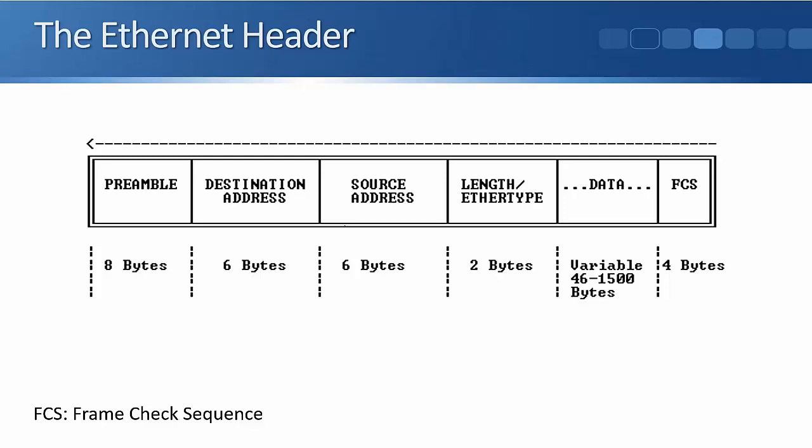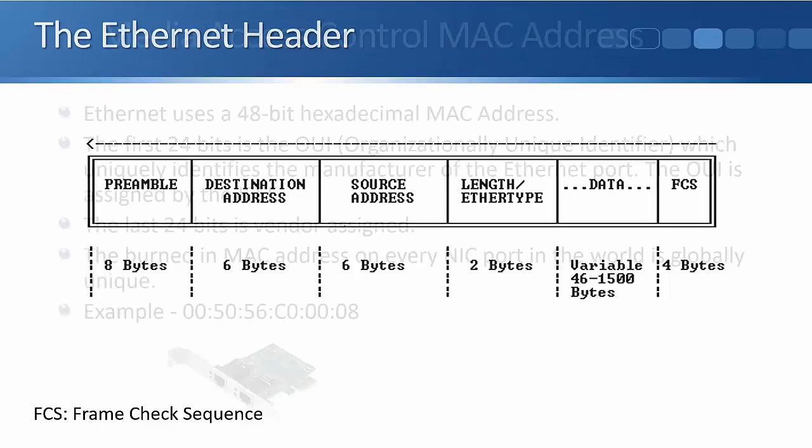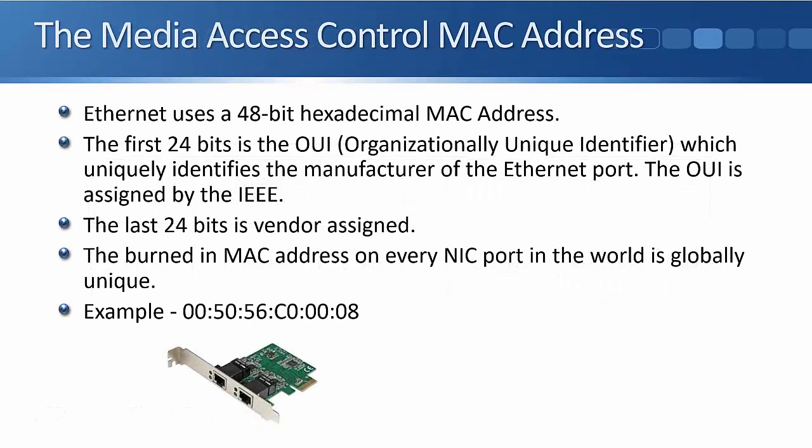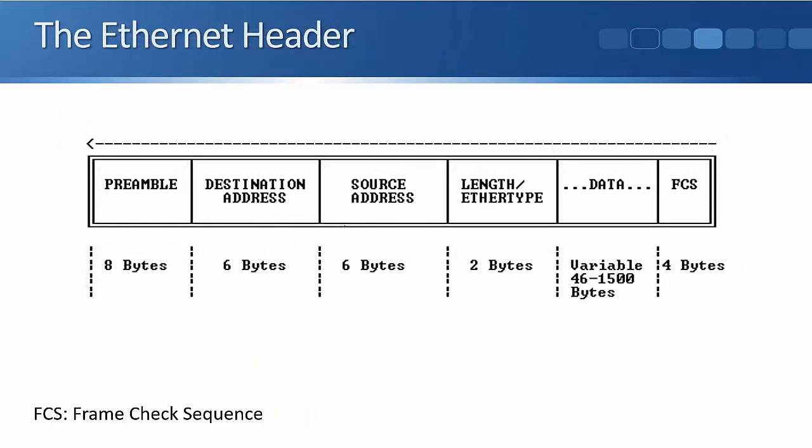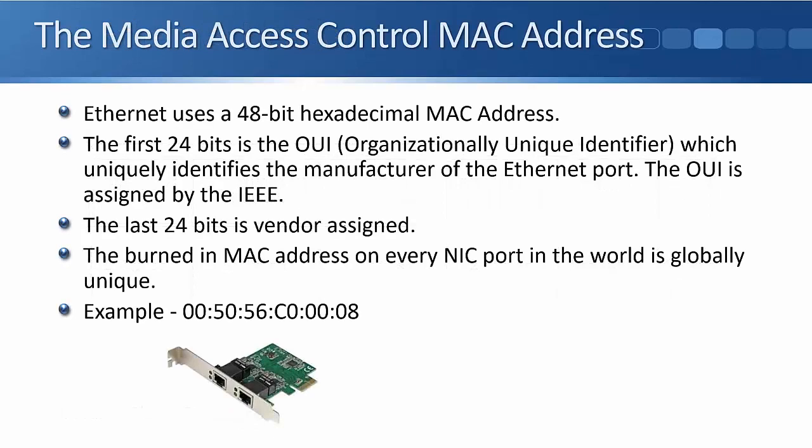And the FCS, the Frame Check Sequence. That's a cyclical redundancy check used to check for the integrity of the frame, to check that it has not been corrupted during transit. Let's look at that Layer 2 Ethernet address, the MAC address. MAC stands for Media Access Control. The MAC address is a 48-bit hexadecimal address.